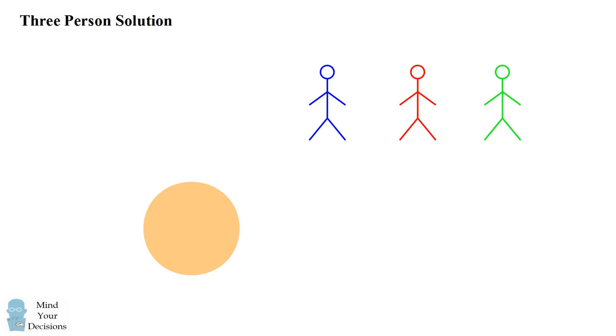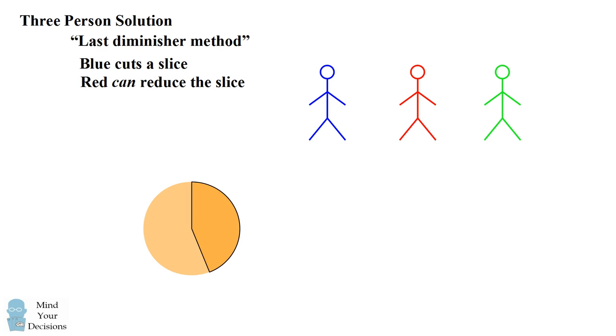What would happen if we had three people cutting the cake? How can we divide the cake fairly? What we're going to do is divide up the first slice by what's known as the last diminisher method. Blue is going to cut a slice of the cake, and it can be any size that blue wants. Now red is then going to inspect the slice, and red can reduce the slice if red wants. So let's say red cuts the slice, and then attaches the remaining part of the cake together. So now this is the slice that red has cut. Finally, green can look at that slice and say, well, I can reduce it a little bit more too. So let's say green reduces the slice.